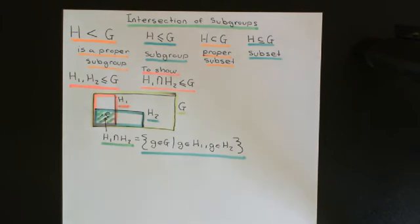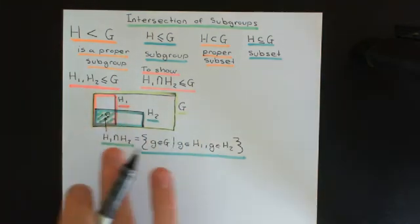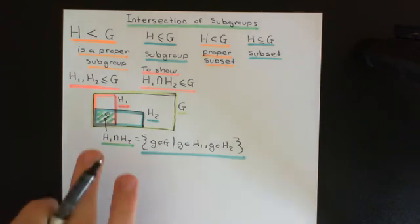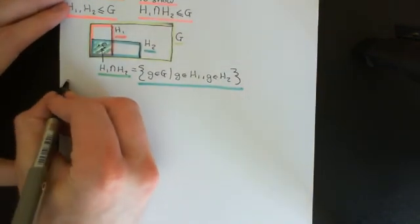To show this, we just need to make sure it obeys the axioms of group theory with the inherited composition law from G. Now we know there is no need to check the second axiom — associativity — because whatever subset you take of G and put this inherited composition law on it, it will always obey associativity. Whether it's a subgroup or not, it will always have associativity because if the inherited composition law didn't obey associativity, then it wouldn't obey associativity in the larger group either. So we don't need to worry about axiom two, but we do need to worry about axioms one, three, and four.